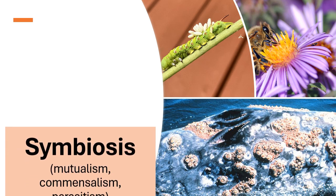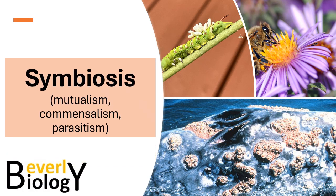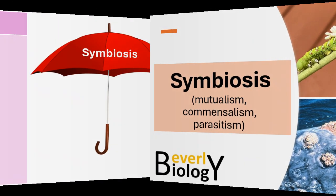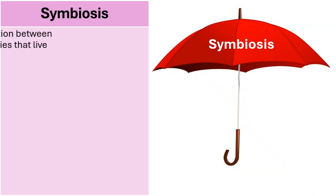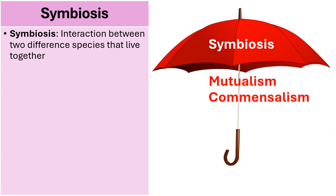The topic of this video is the ecological relationships known as symbiosis. Symbiosis are the interactions between two different species that live in a close relationship with one another. Underneath the umbrella of symbiosis is mutualism, commensalism, and parasitism. Let's break down each of these one at a time, starting with mutualism.